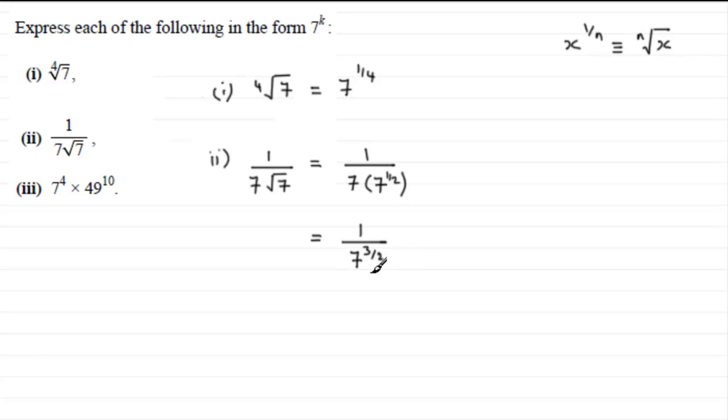Now we need to express this in the form 7 to the k, so we pick up on another rule. If you have 1 divided by x to the power n, this is identical to x to the power minus n. And so our n is 3 over 2, so we just rewrite this as being equal to 7 to the power minus 3 over 2. So k for this example would be minus 3 over 2.